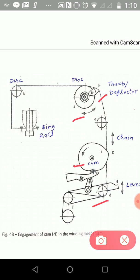The disk A carries a cam or deflector or thumb which projects beyond the periphery of the disk and thus forms a larger diameter than the rest of the disk.